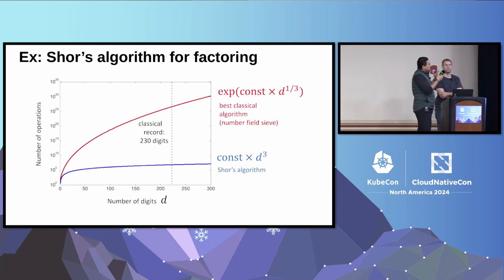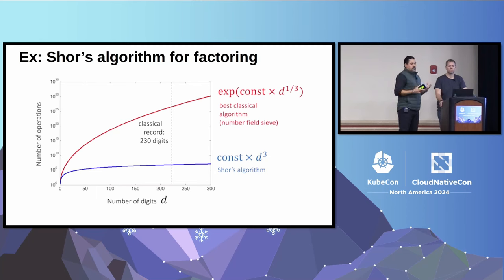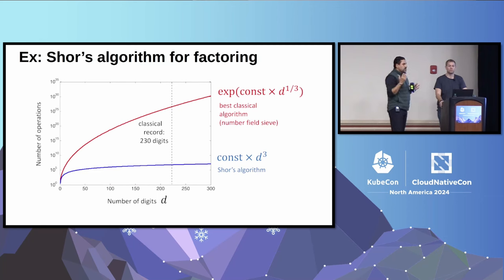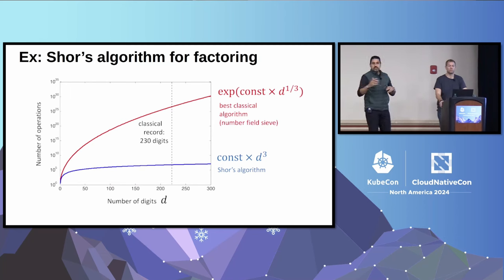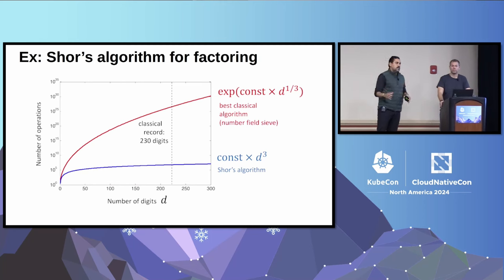A good example is factoring large numbers. Pretty much all of classical cryptography is based on factoring large numbers. For cryptography, you want problems that are difficult in one direction and easy in another. Factoring is one of those — if I give you two numbers and tell you to multiply them, very easy, a five-year-old could probably do it. But reversing that with large enough numbers, nobody here could compute by hand, and even the best computers would take years and years.